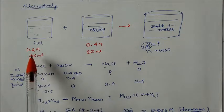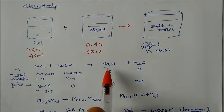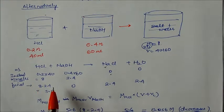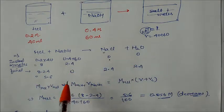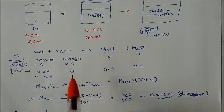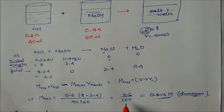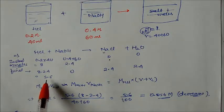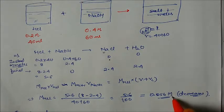For an HCl and NaOH example: HCl is 0.2 molarity at 40 ml and NaOH is 0.4 molarity at 60 ml. The reaction gives salt and water. Initial moles: HCl = 0.2×40 = 8 millimoles, NaOH = 0.4×60 = 24 millimoles — wait, NaOH is 2.4 millimoles at 0.04×60. After reaction, excess HCl = 8 − 2.4 = 5.6 millimoles. Concentration of HCl = 5.6/100 ml = 0.056 molarity. The solution becomes acidic.